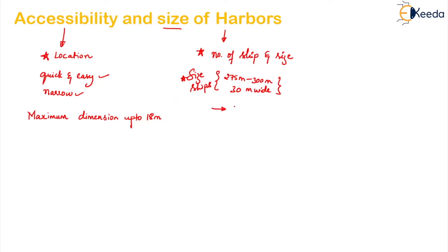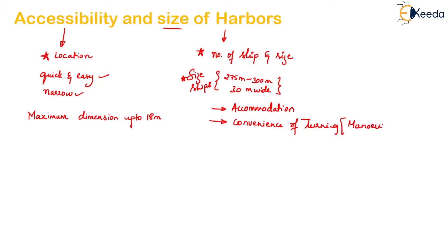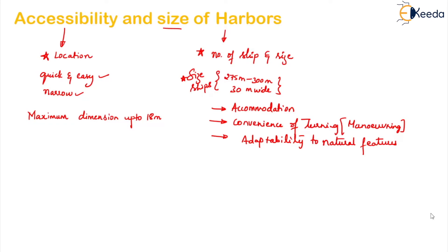The major factors on which the size depends are: the accommodation required — how many ships will stay at a single time — convenience for turning (also called manoeuvring), and adaptability to natural features. Regarding the entrance width, the narrower the entrance the better is the interior protection, but it should not be so small that ships cannot enter. Even when breakwaters are high enough to protect the harbour, the entrance width will be dependent on this.